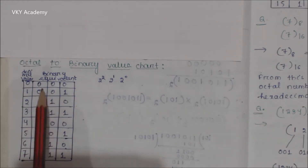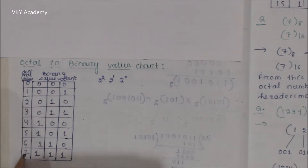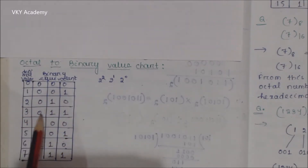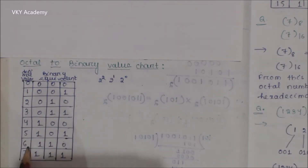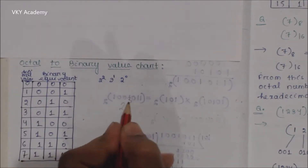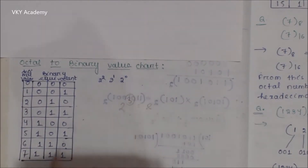We discussed in the previous class that an octal number system consists of 8 numbers starting from 0 to 7. So 0 has equivalent binary 000, 1 has 001, 2 is 010, 3 is 011, 4 is 100, 5 is 101, 6 is 110, and 7 is 111. Total of 8 numbers are available in octal number system. The grouping is made for 3 bits because 2 to the power 3 is equal to 8, that is why we take a group of 3.